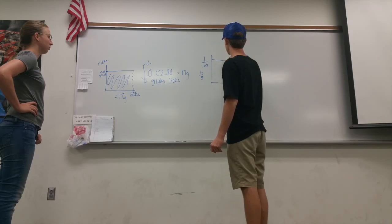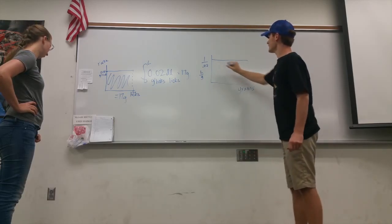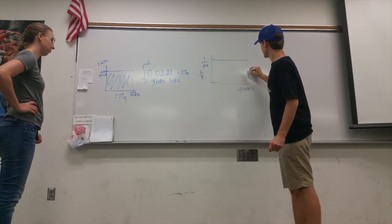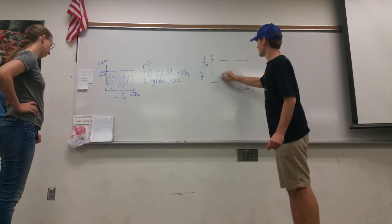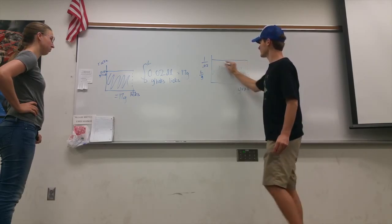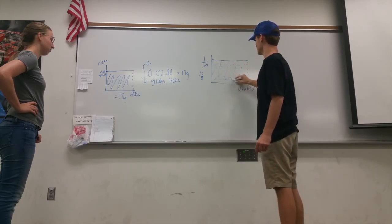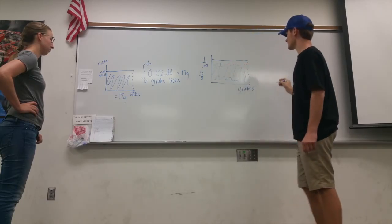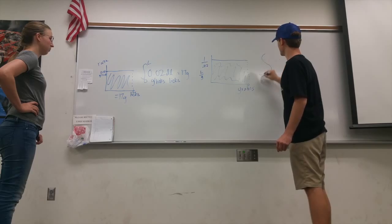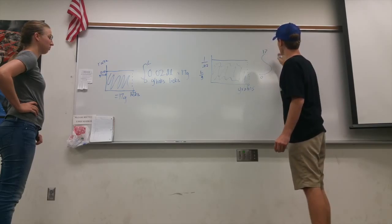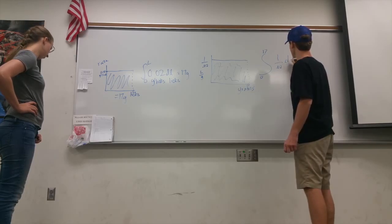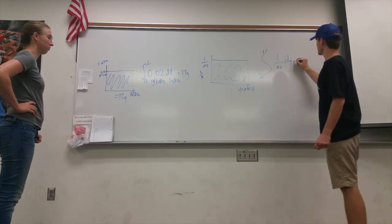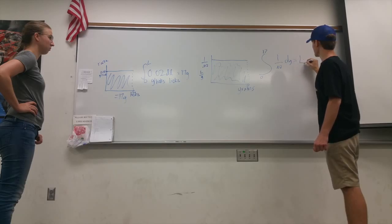It equals 50, but I'm just going to leave it as that. We're going to sum up this area to 17 grams. This whole area under here will give us the total amount of licks it will take to get to 17 grams. So our integral is going to look like 0 to 17 grams, 1 over 0.02 dg, equals some amount of licks.